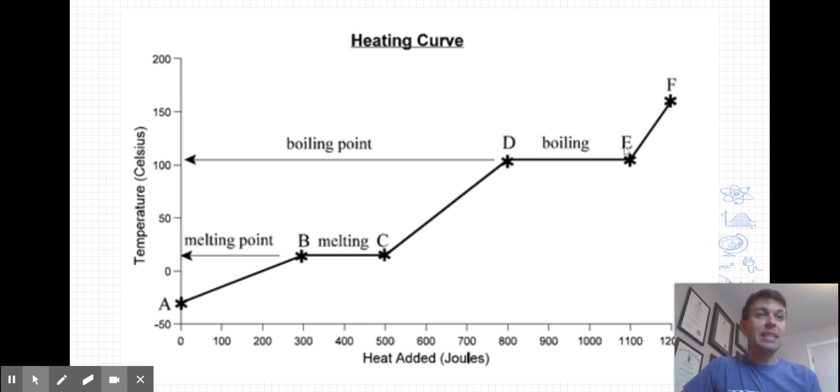From point D to E is where the substance is breaking all of those intermolecular forces. Now, once again, the temperature is not increasing from D to E, but we still are adding heat. So the heat is going in to breaking those intermolecular forces of attraction.